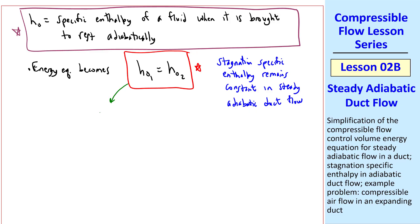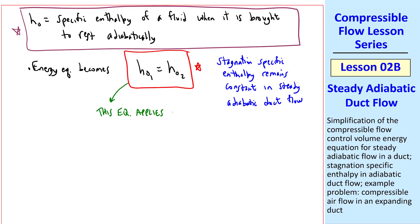And as a side note, this equation applies even if the flow is not isentropic. In the derivation of this equation, we've said nothing about isentropic conditions. So there can be friction and other irreversibilities, and this equation will still hold, as long as the flow remains adiabatic. This will become important later on when we talk about shock waves and flow in long ducts where friction becomes important.